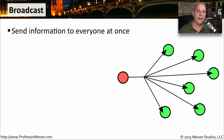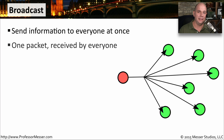A broadcast is when one device sends out one piece of information and everybody else on the network sees this information — and not only sees it, but can react to it. This one-to-many communication is a broadcast, and we are hitting everybody on our local network when we send a frame that is a broadcast.